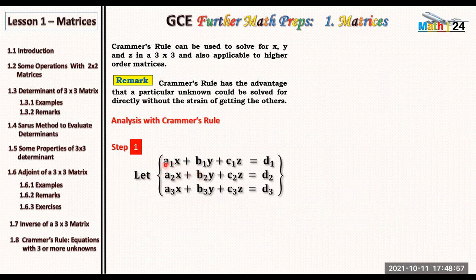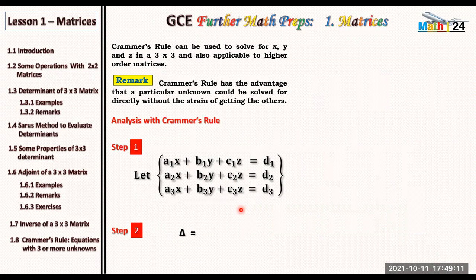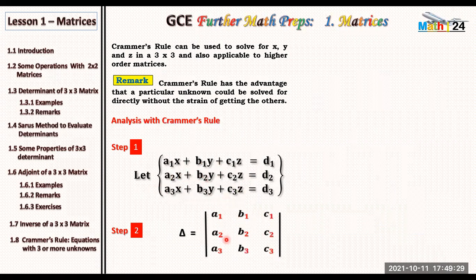So let us get the analysis with Cramer's Rule. The first step is: let this be a set of equations with three unknowns — equation one, equation two, and equation three. In step two we are looking for the determinant. This determinant is going to be the coefficient matrix on the left hand side: a1, b1, c1 on row one; a2, b2, c2 on row two — these are the coefficients of x, y, and z in equations one, two, and three. We look for the determinant of this coefficient matrix.